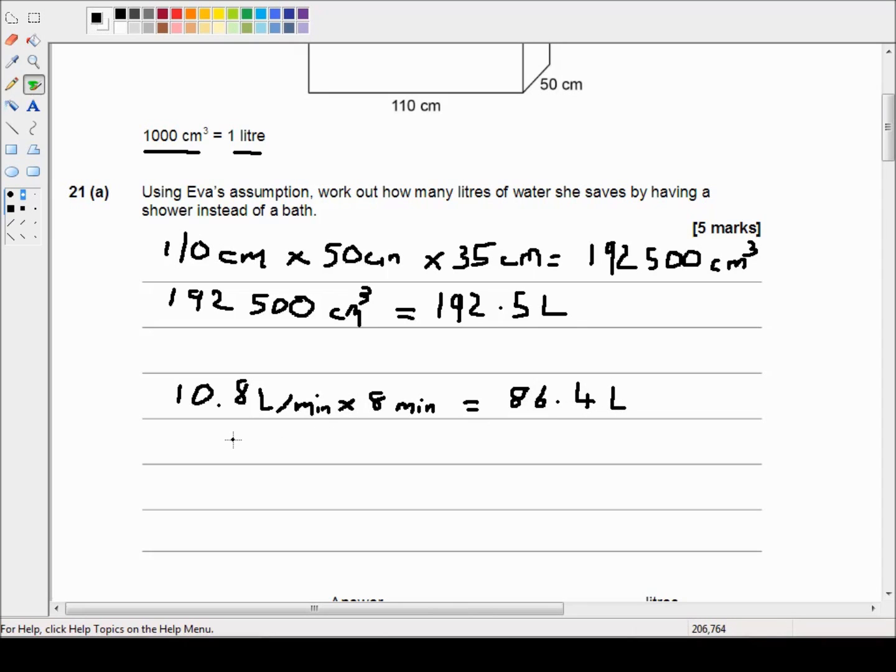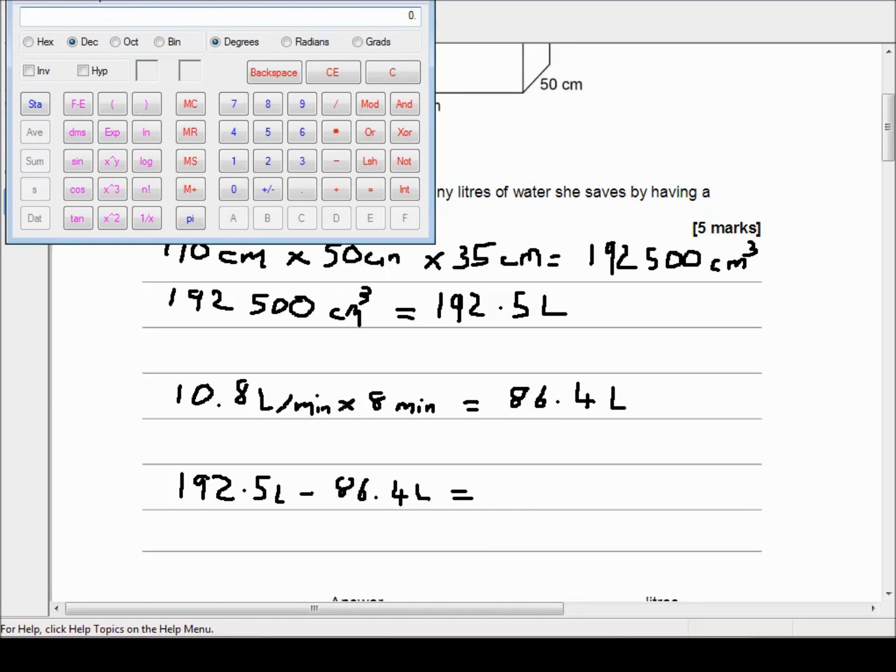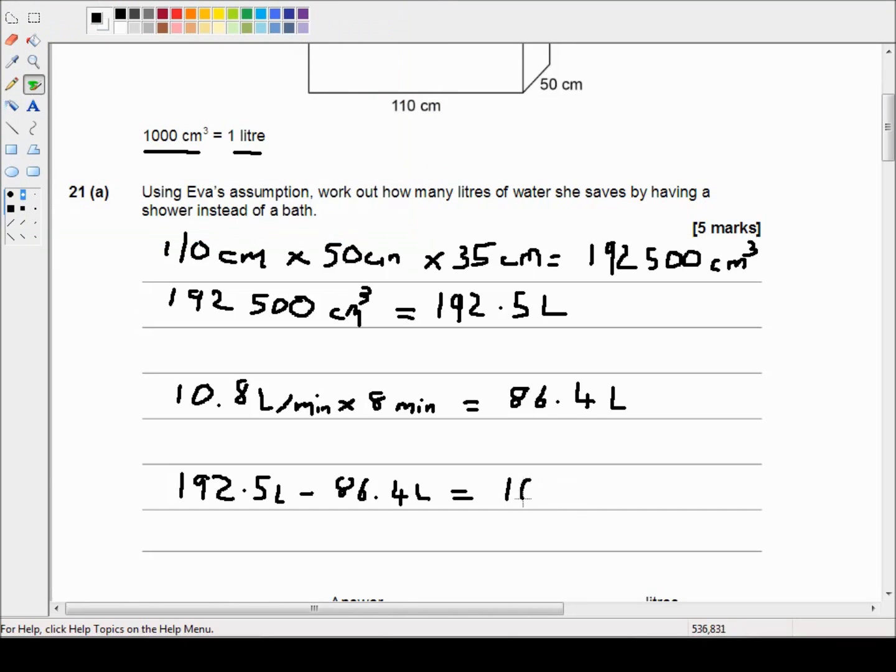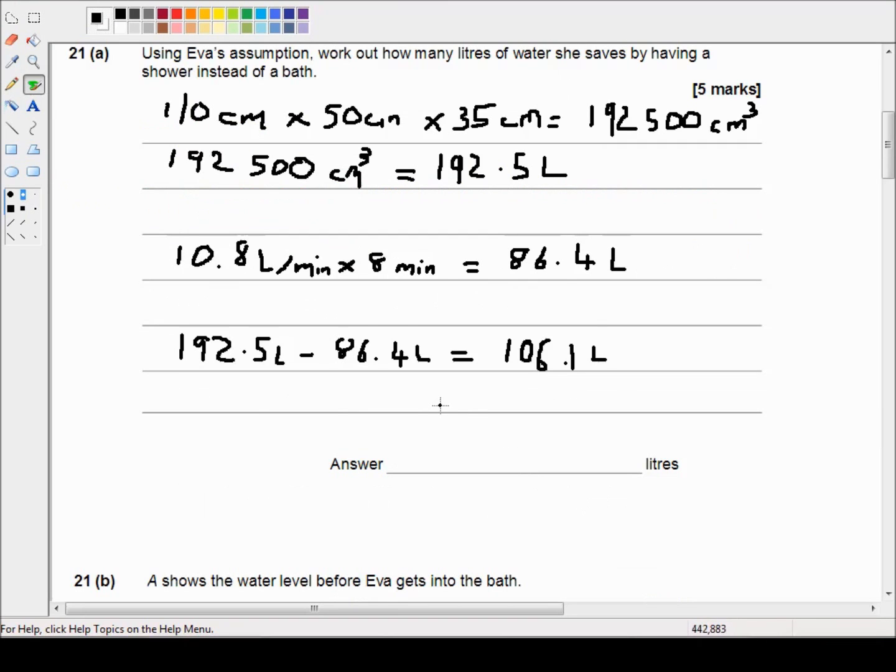So the water saved is 192.5 liters minus 86.4 liters. I'll use my calculator: 192.5 minus 86.4 equals 106.1 liters. So our answer is 106.1 liters of water saved by having a shower instead of a bath.